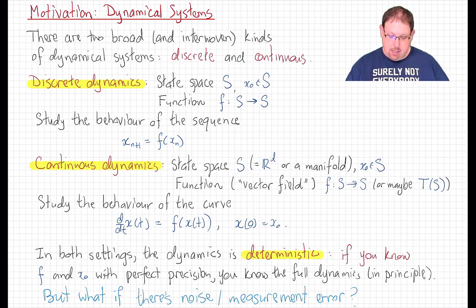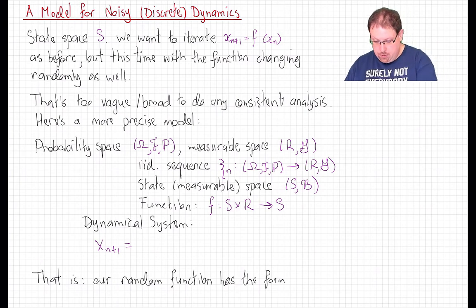So in the discrete case, one sort of general scheme we might use is to say, let's take the same framework. We have a state space and an initial point X0, and we're going to iterate some function f, except that now that function f might be a noisy function. And so although we expect it to have some sort of overarching expected behavior, at each time we apply it, it's actually a random function f_n there.